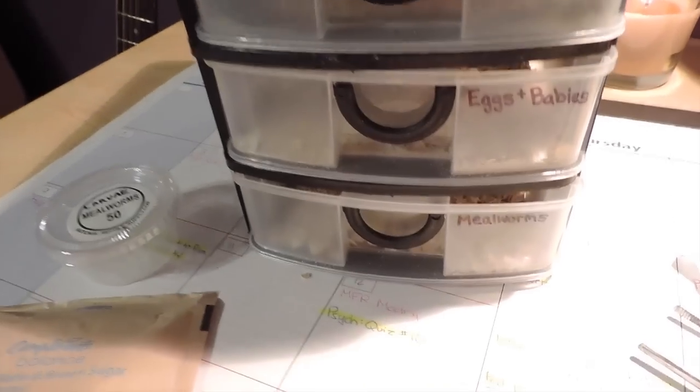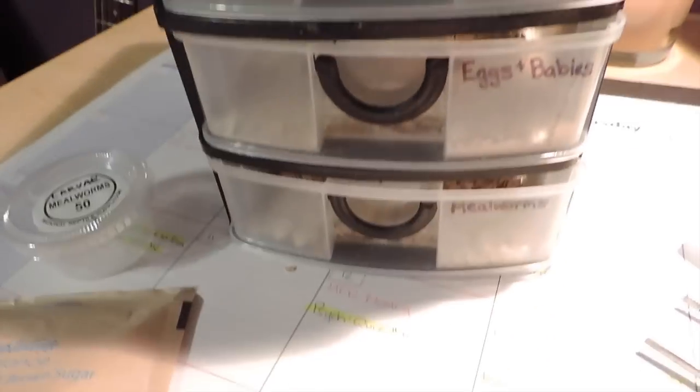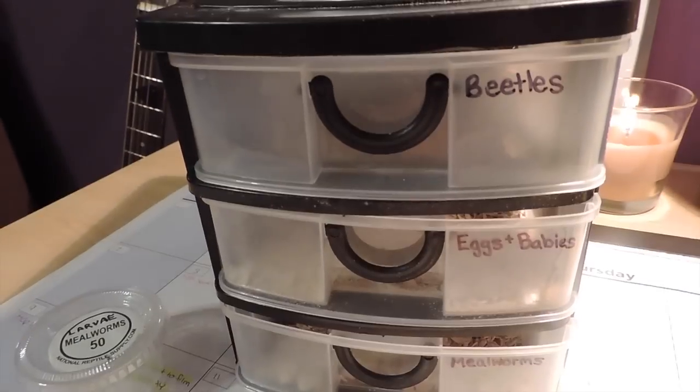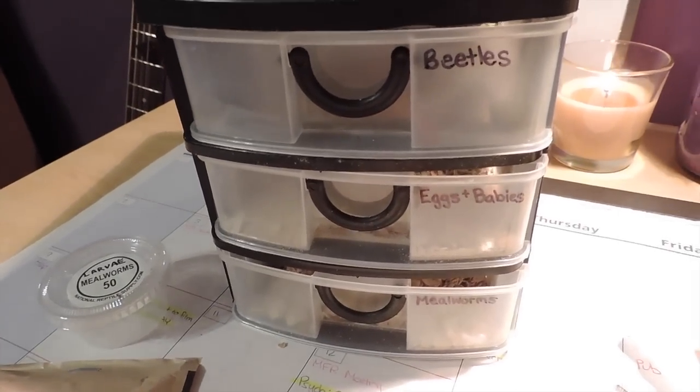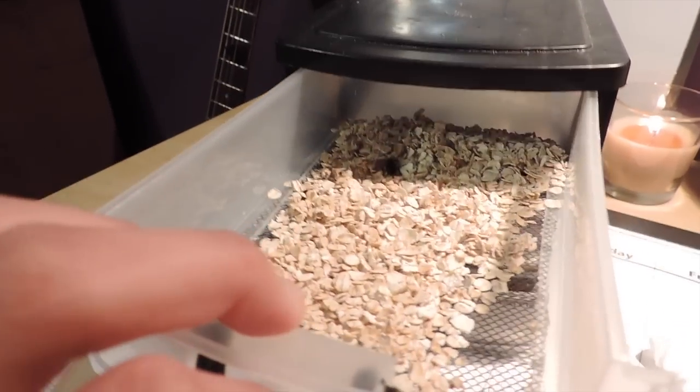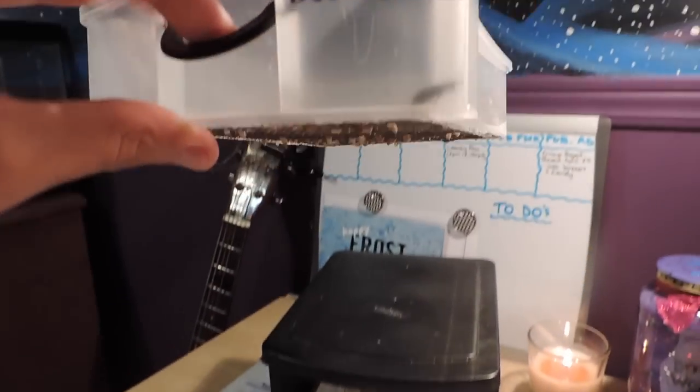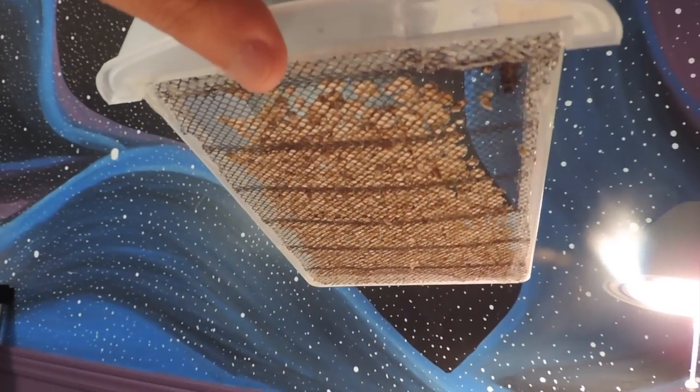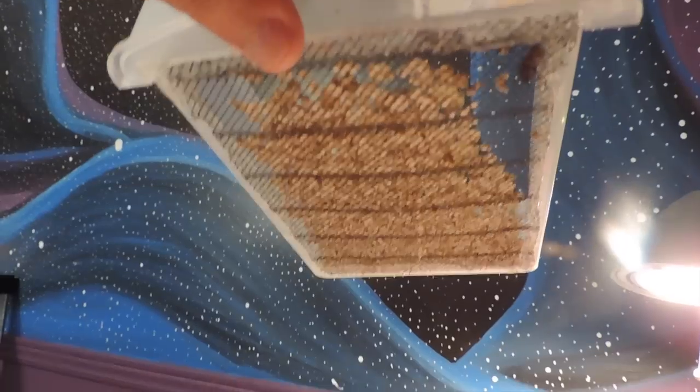What you want to do is make three different components for your worms. In the top container what I did was use an exacto knife and cut out the bottom of the plastic drawer.